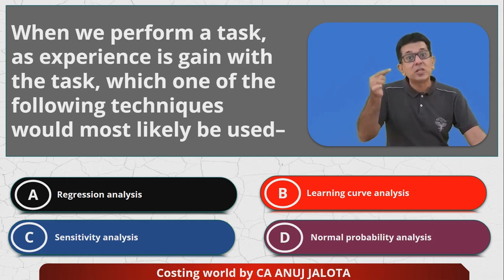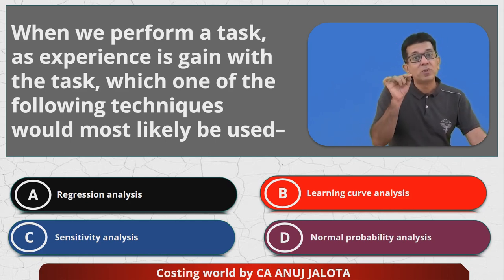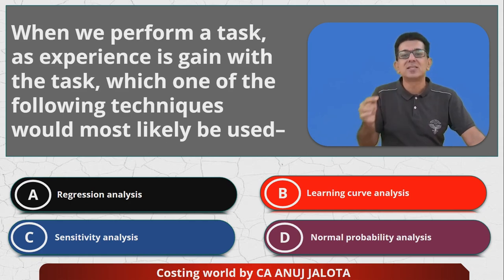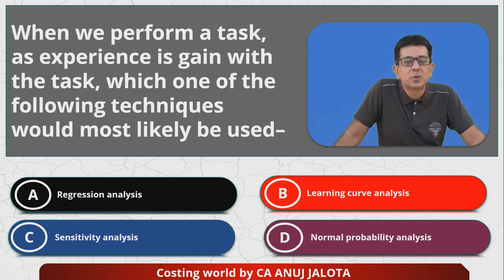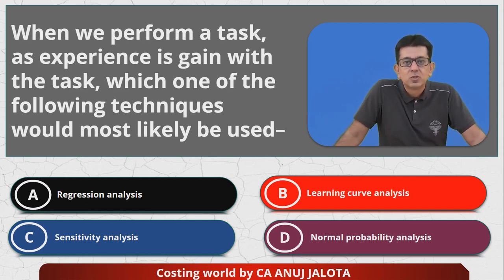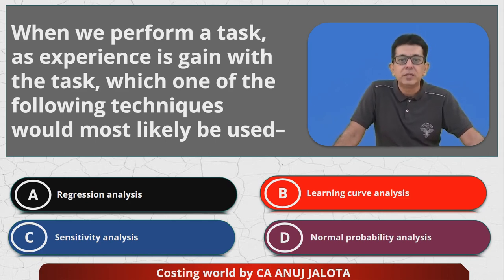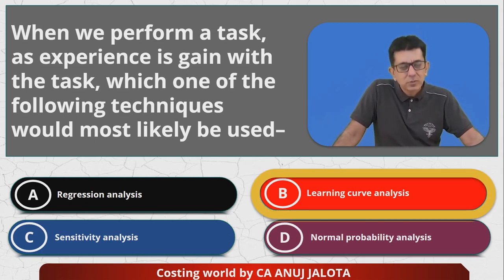So with each time you perform the same task, you usually take lesser time. This tendency is called the learning curve. So the answer here is B — learning curve analysis. That's the correct answer.